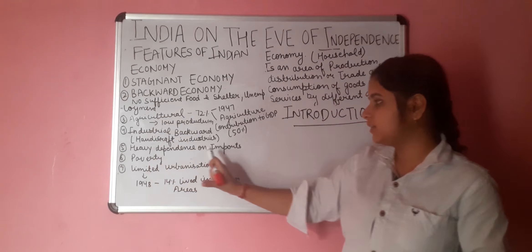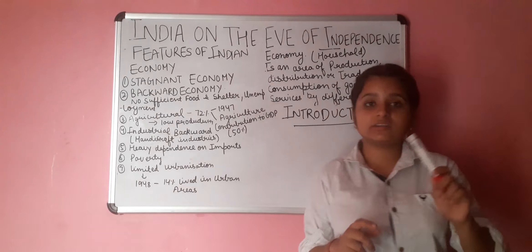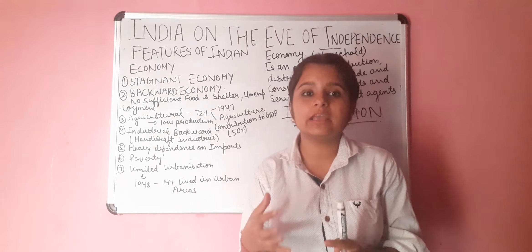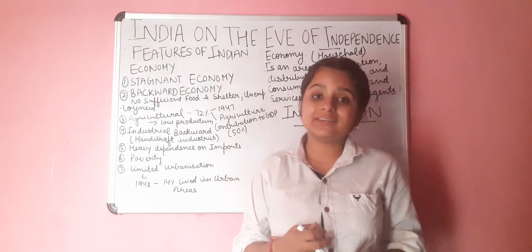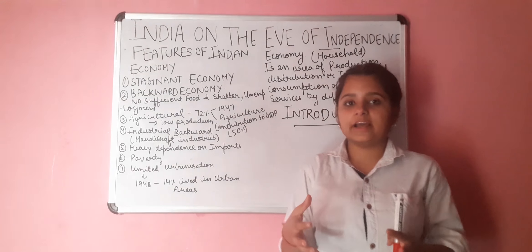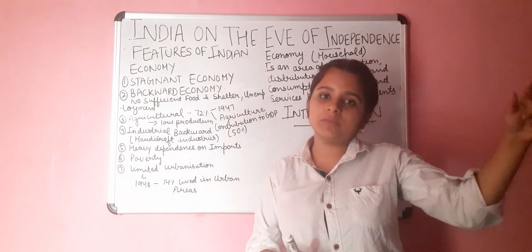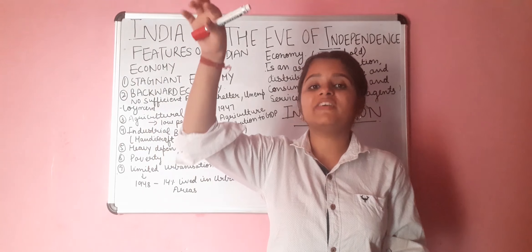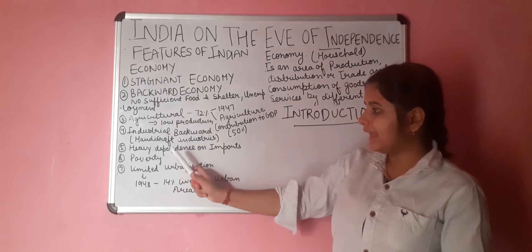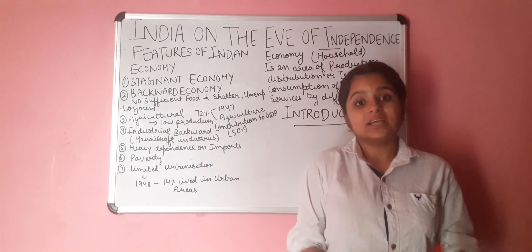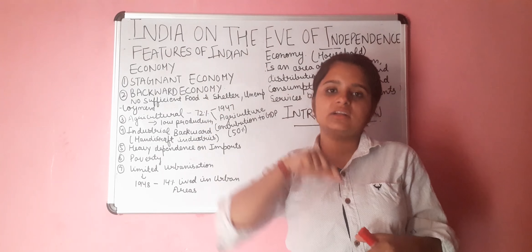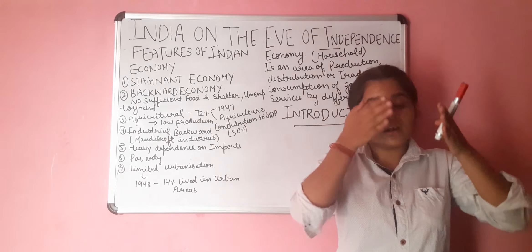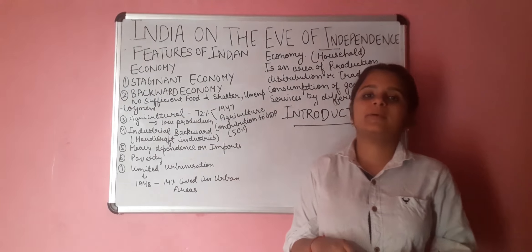Feature 5 is heavy dependence on imports. As I explained, we were industrially backward because there was not enough production happening here. The Britishers took raw materials from India to their home country, Britain, produced finished goods there, and then sold those finished products back in India. This meant we had to depend on and wait for their materials. We had nothing of our own at that time. That is why after 1947, we were heavily dependent on imports.